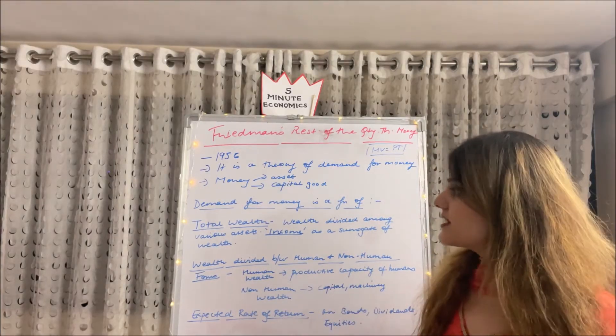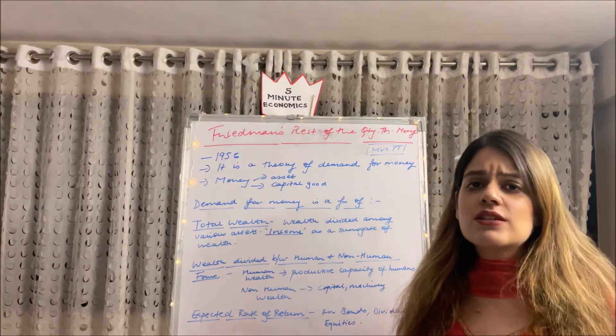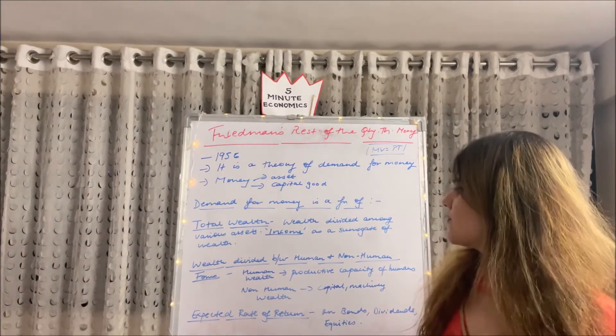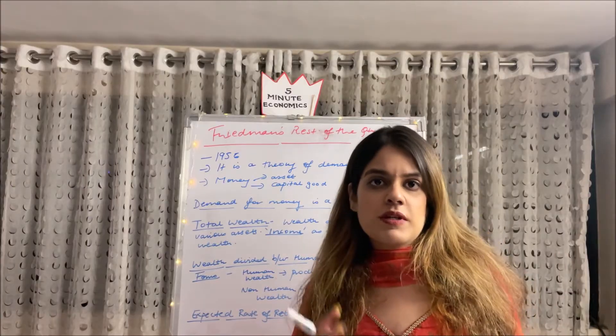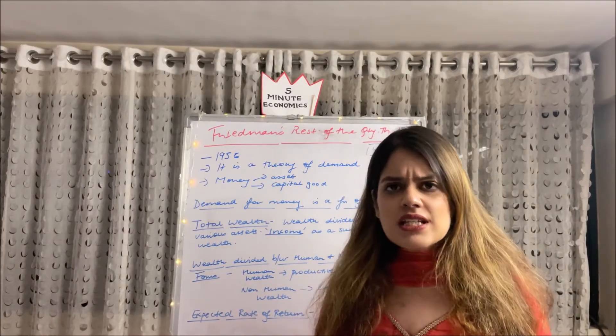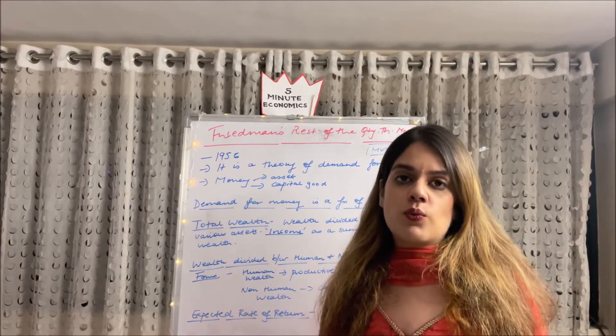Firstly he said demand for money is a function of total wealth. Total wealth's estimate is pretty difficult. It is divided among various assets, right? A person's wealth is divided, but he said that since it is difficult to find out wealth, we can call income as a surrogate for wealth.